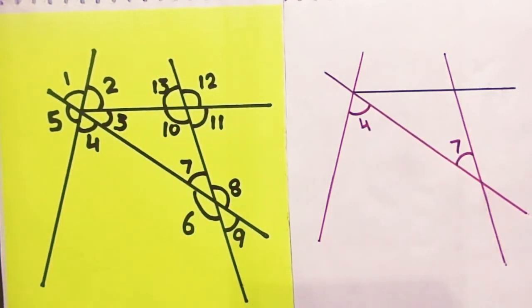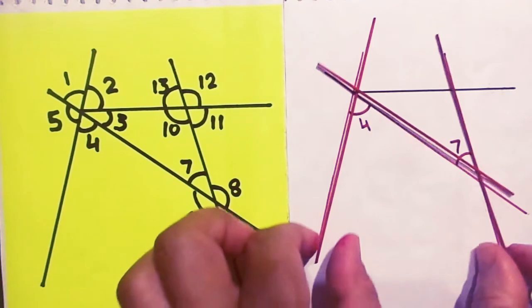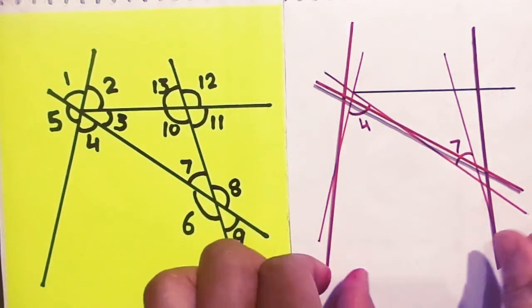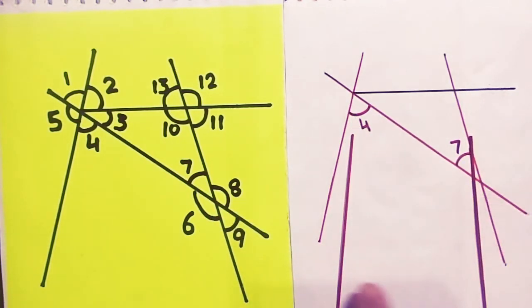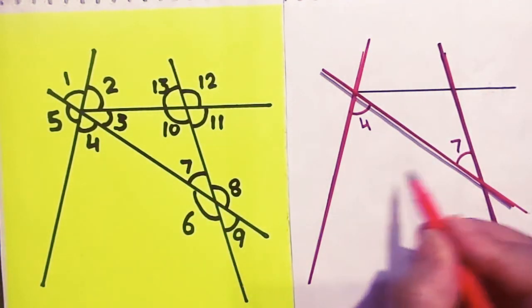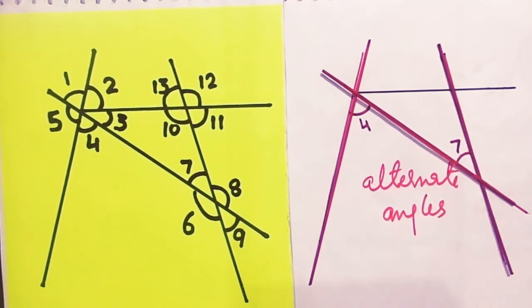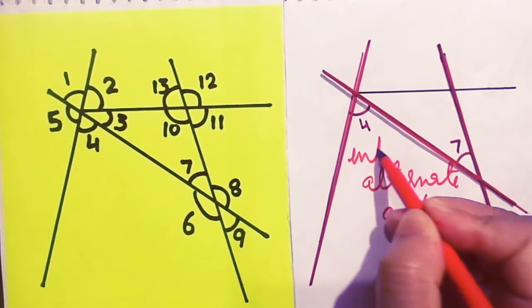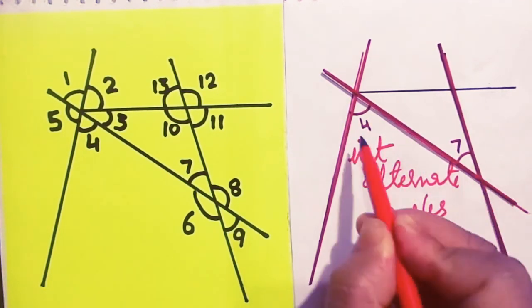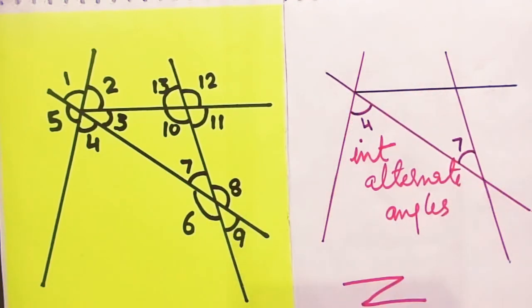Let us look at angles 4 and 7. These two lines are being cut by a transversal. In question number 1, our lines looked like parallel, but now the line became tilted like this. So 4 and 7 are known as interior alternate angles, which looks somewhat like the letter Z.